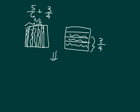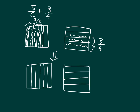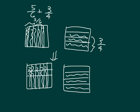Let's make equivalent fractions. Starting with 5-6ths, we draw 3 horizontal lines to divide into 4 parts. The total is 6 by 4, which is 24. So that's 5 times 4 over 6 times 4, which equals 20-24ths. Counting them: 4, 8, 12, 16, 20-24ths. The other fraction will also use 24ths.